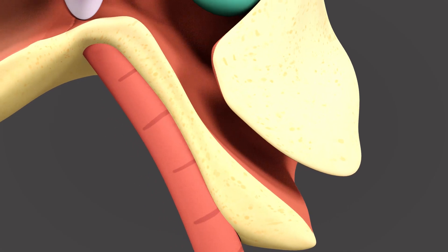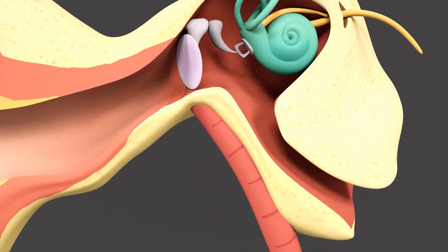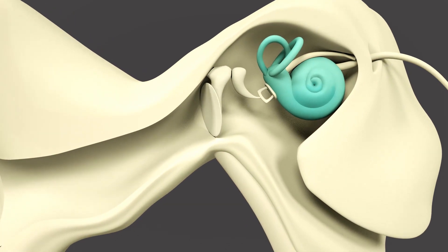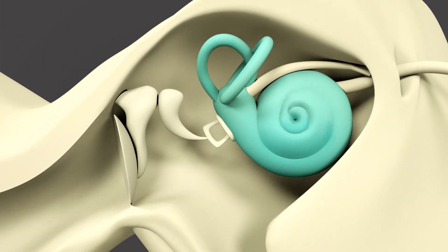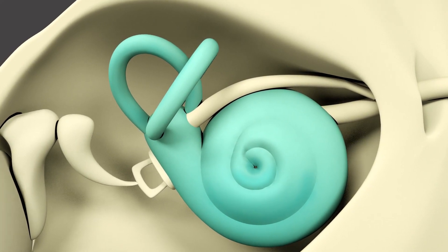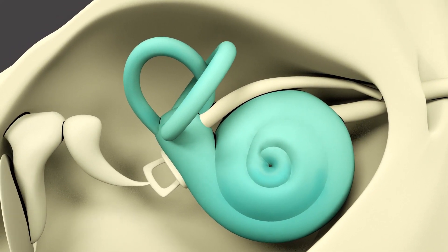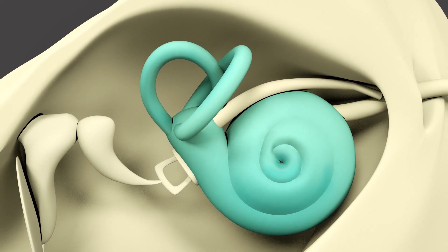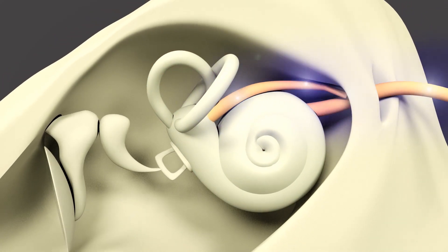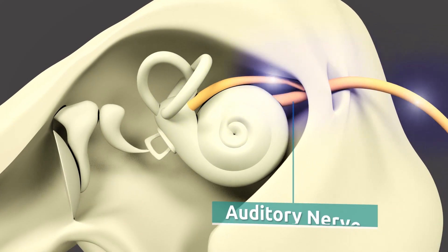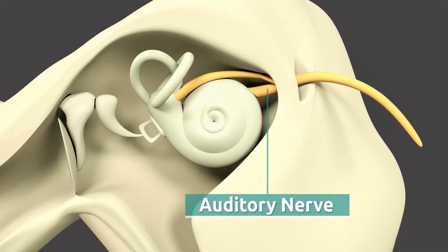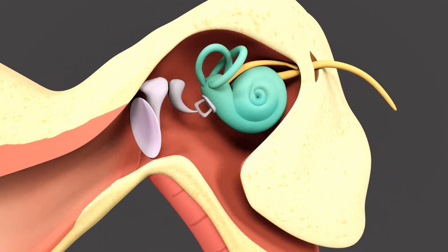The main function of the Eustachian tubes is to equalize pressure within the ear so that the eardrum can properly transmit sound vibrations to the auditory nerve. The cochlea is located in the inner ear. Its elastic structure rolls up, resembling a snail shell. The cochlea converts vibrations received from the middle ear into nerve signals, which are sent to the brain by means of the auditory nerve.